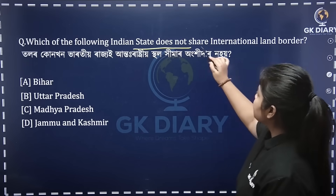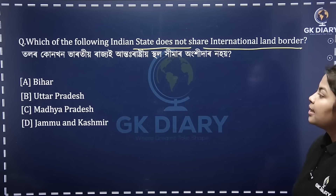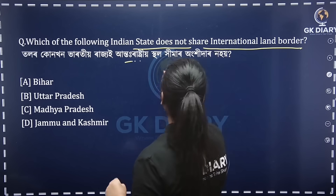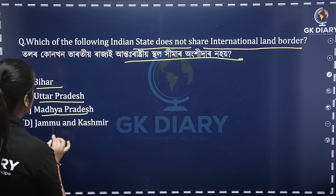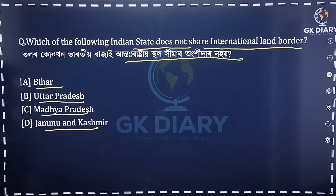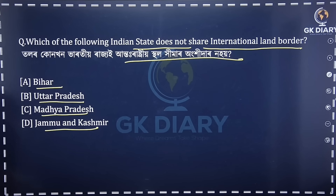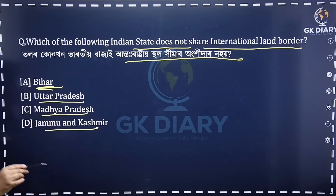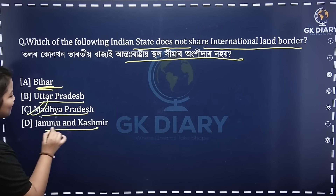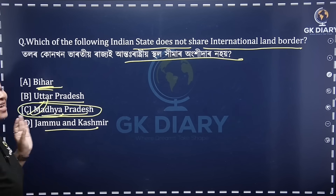Which of the following Indian states does not share international land borders? The options are Bihar, Uttar Pradesh, Madhya Pradesh, and Jammu and Kashmir. What is happening in Bihar? Jammu and Kashmir obviously has a border. MP is the correct answer — Option C.